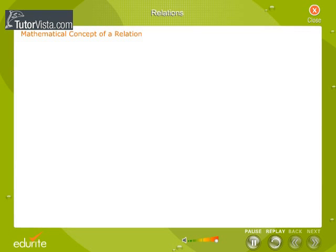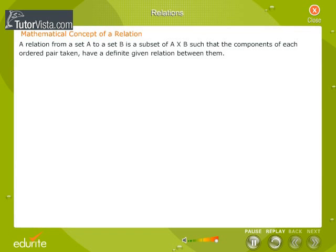Mathematical Concept of Relation. A relation from a set A to a set B is a subset of A × B such that the components of each ordered pair taken have a definite given relation between them.